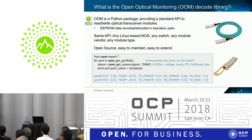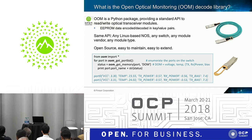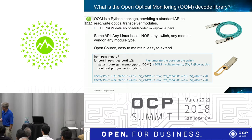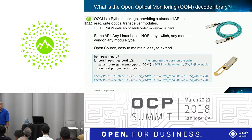Here's a four-line program — a complete OOM program. You sit on a switch that has OOM and say: use the package, get a list of ports, and for each port give me the DOM data — digital optical monitoring data — and print it out. You'll get port zero is 3.3 volts, 23.5 degrees, transmit power, receive power, laser bias — and you'll get that for every port. Four lines on any switch that runs OOM, any NOS that runs OOM, and you'll get this data out. The idea is it works anywhere and gives you sensible, rational results.